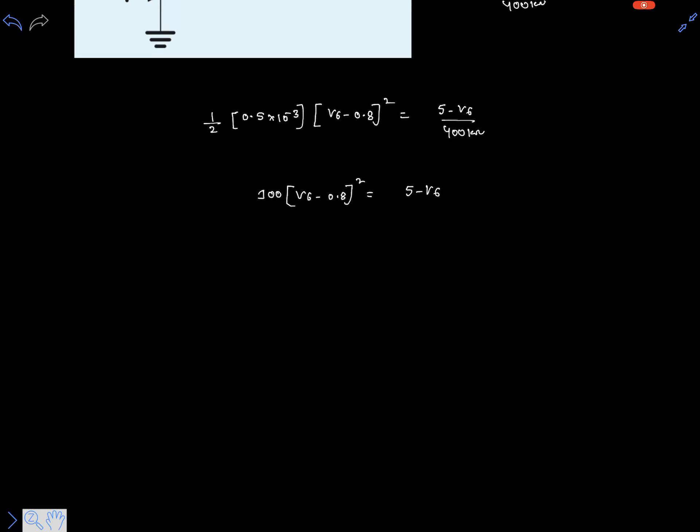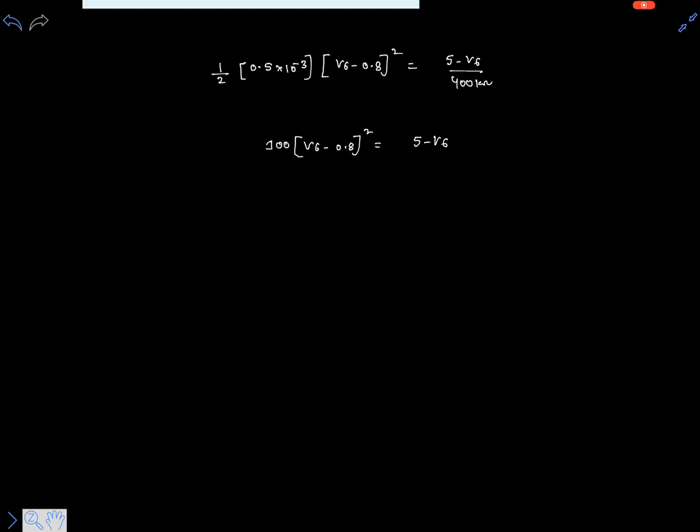Let's simplify this equation further. It is 100V6 square plus 0.64 minus 1.6V6, which equals to 5 minus V6. By rearranging the terms, 100V6 square plus terms minus 159V6 equals to 0.